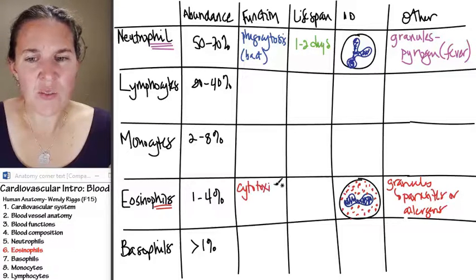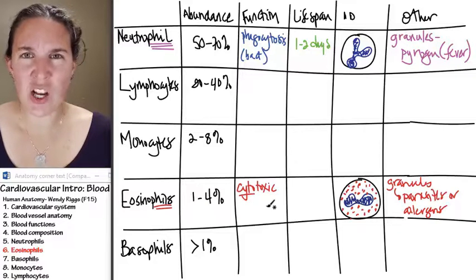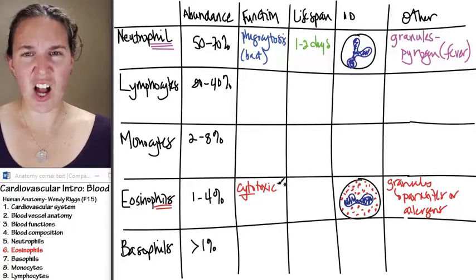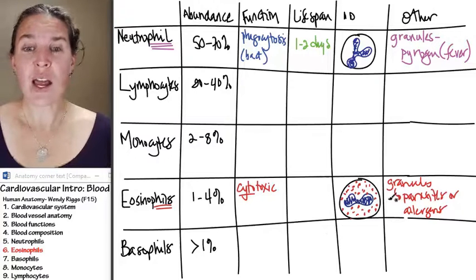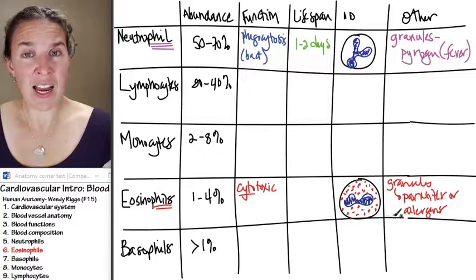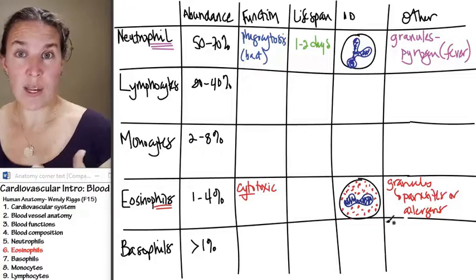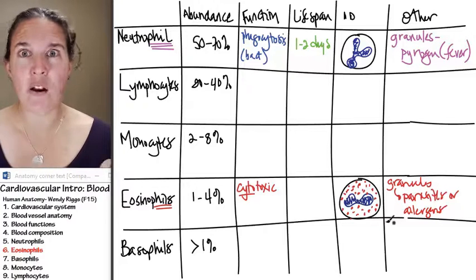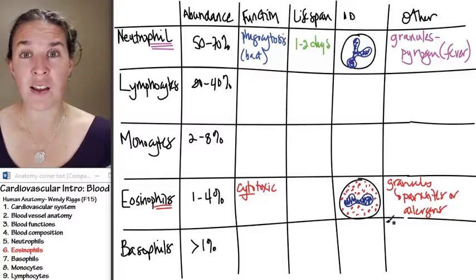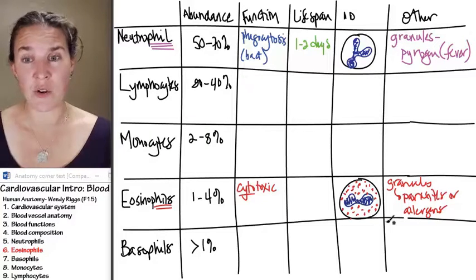And so think about that for a minute. Cyto means cell, and toxic means dead cell. So eosinophils fly into action and release poison particles. They barf poison chemicals on bad guys and try to destroy them that way.